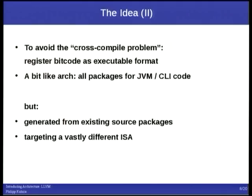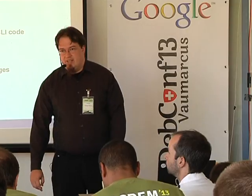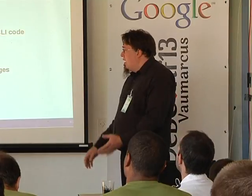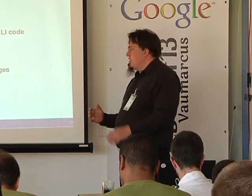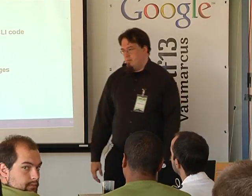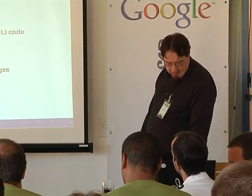I want to generate this from existing source packages. I want to use existing C and later C++ code, not change it as far as possible. Basically we're just targeting different ISA instruction set architectures that are very different, but not as different as stack-based systems like Java and CLI.